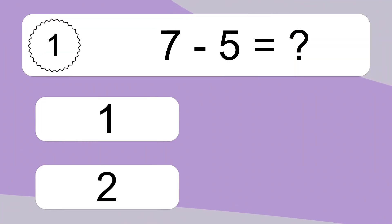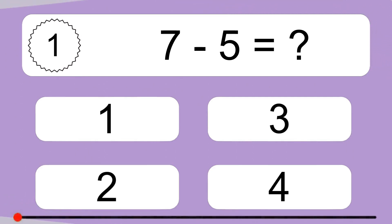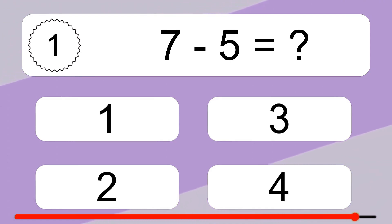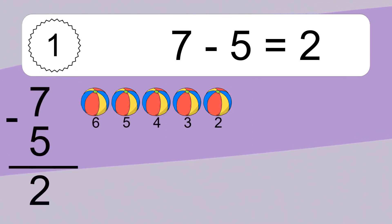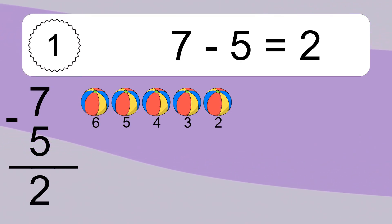7 minus 5 equals what? 7 minus 5 equals 2. Let's count it! 6, 5, 4, 3, 2.